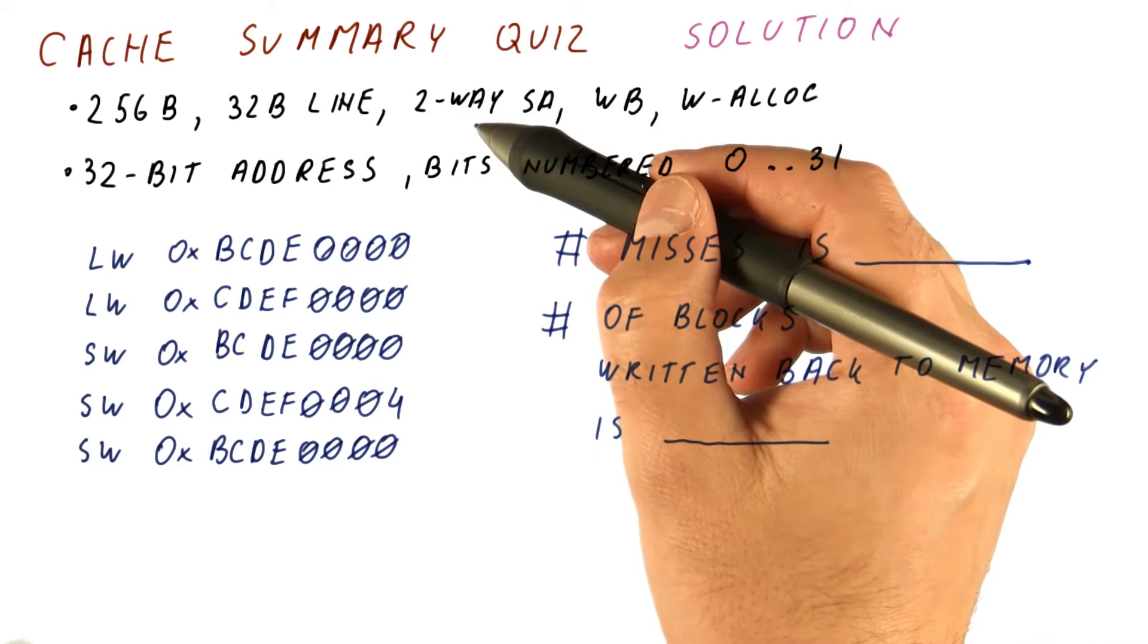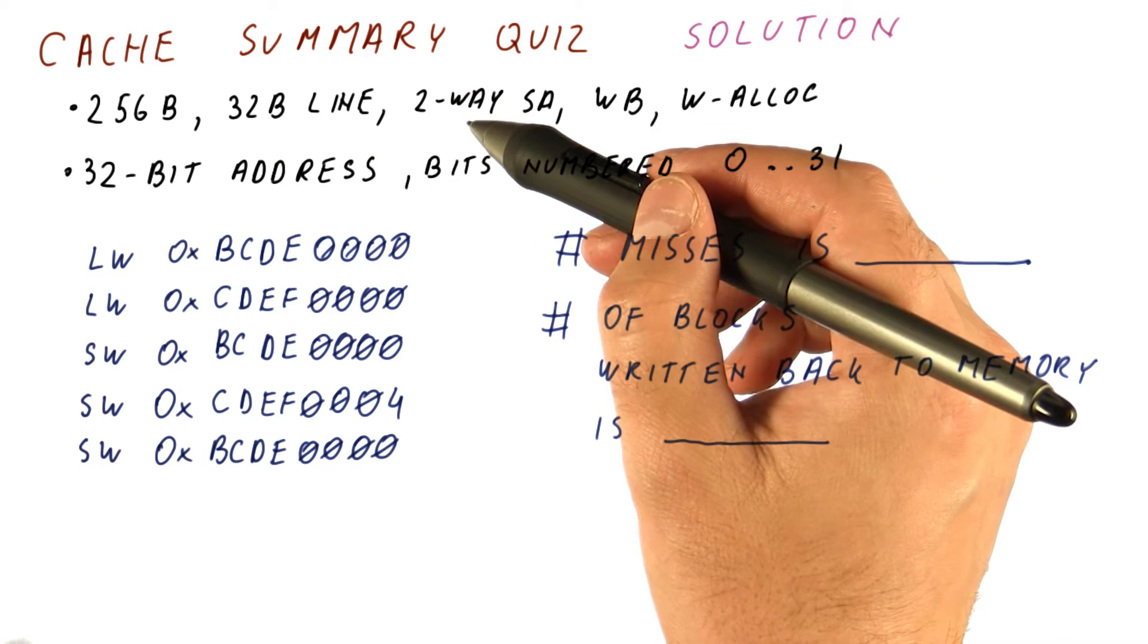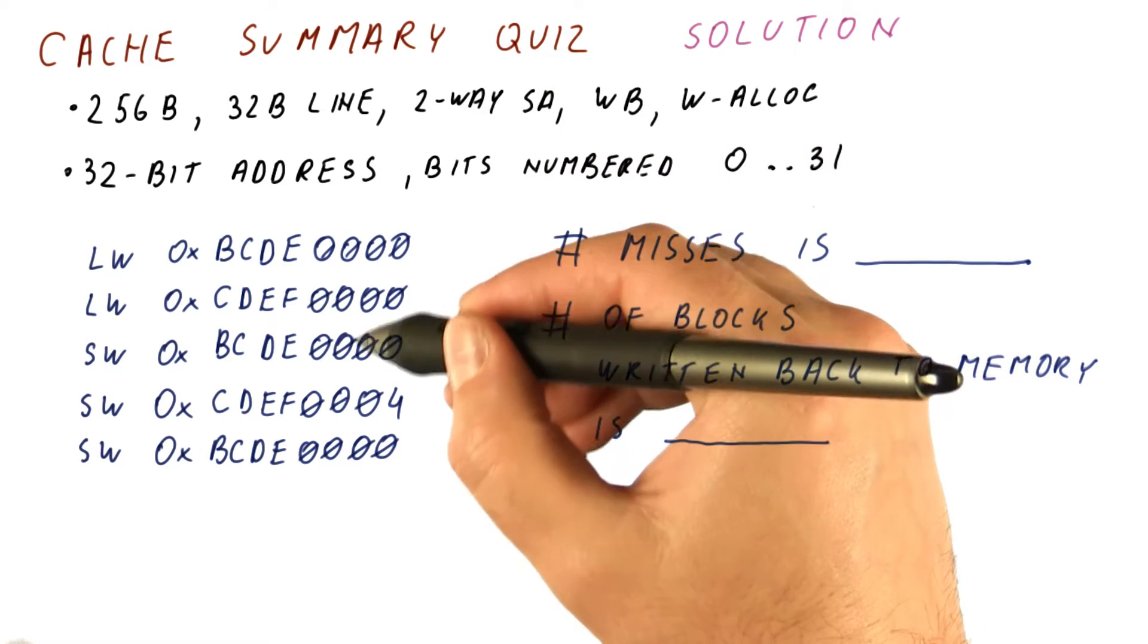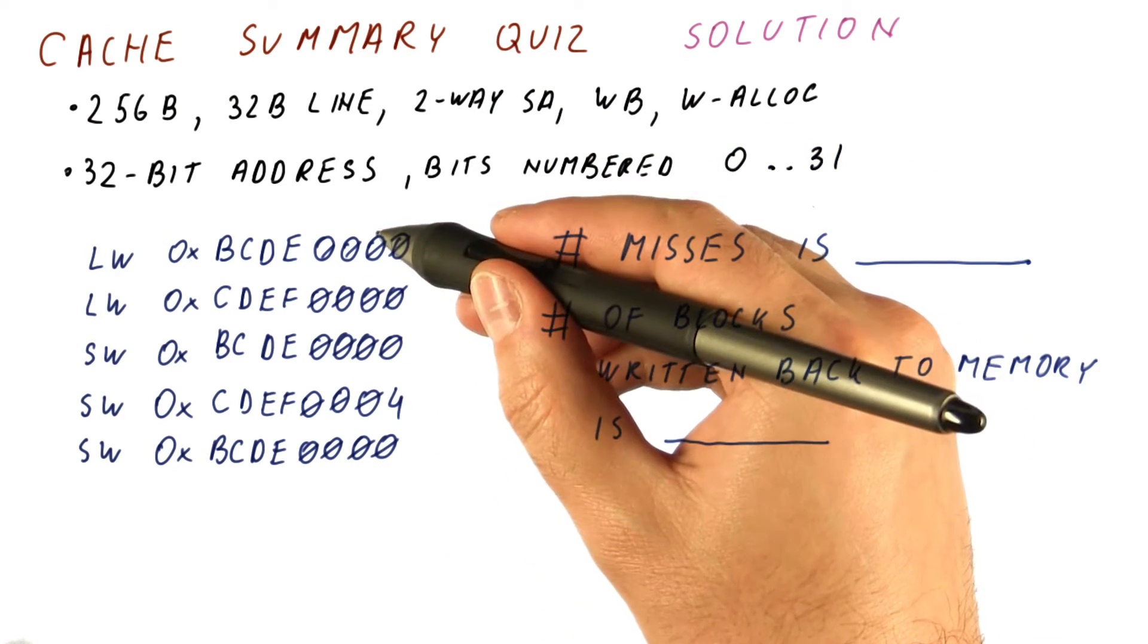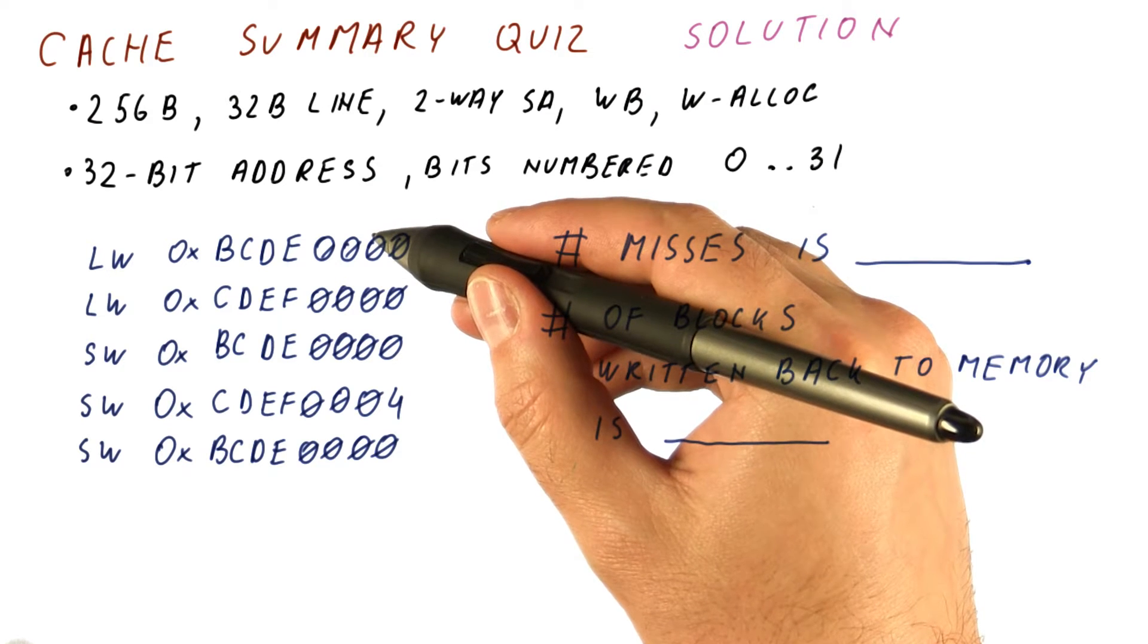And because it's two-way set associative, that means that the next two bits are the index bits. So all of these have the same index bits, which means they map to the same cache set.